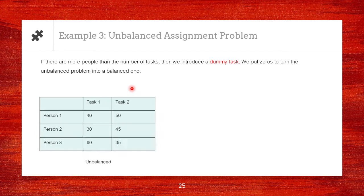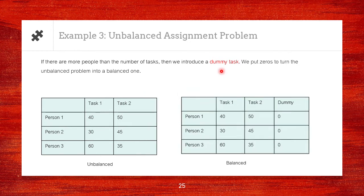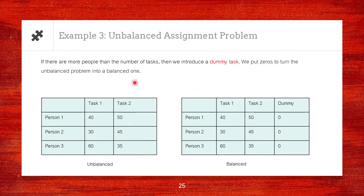Now, for example, if this is our opportunity cost table, which is not balanced, notice that the number of people is greater than the number of tasks. If this is the case, we introduce a dummy task, and we put zeros so that the unbalanced problem will become a balanced problem. And now that this is a balanced problem, we can carry out the steps of the Hungarian method.